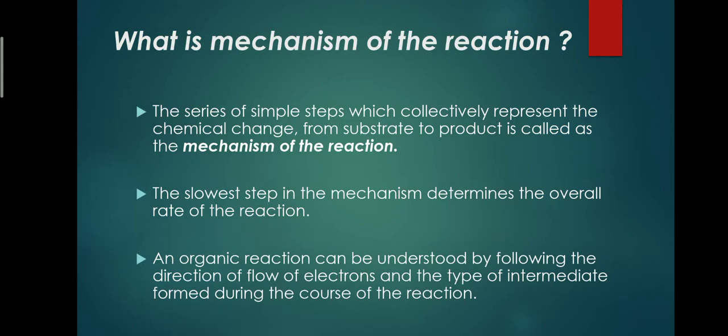We can understand that path by following the direction of electron flow. We can also understand the type of intermediate formed. The direction of electron flow depends on the type of intermediate formed, the nature of the substrate, and the nature of the reaction conditions. These three things govern the path of a reaction.